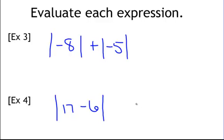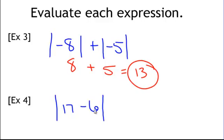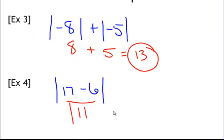Try these on your own: absolute value of negative 8 plus absolute value of negative 5, and the absolute value of 17 minus 6. Pause and try it. Absolute value of negative 8 is positive 8 — it's 8 spaces away from 0. Absolute value of negative 5 is positive 5 — it's 5 spaces away from 0. So 8 plus 5 is 13. For number 4, absolute value of 17 minus 6: 17 minus 6 is 11, and the absolute value of 11 is 11.